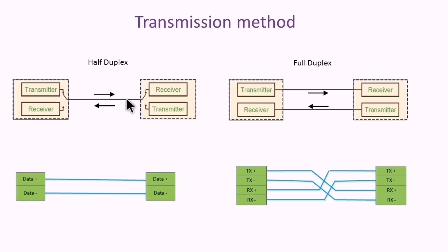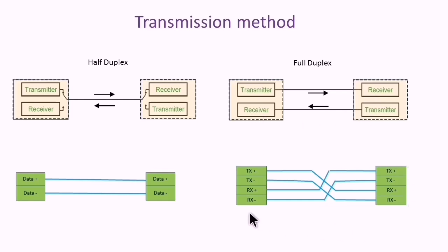The node can transmit the request and then wait to receive the response from the other node, and this method can work with just two wires. In full duplex, the node can transmit and receive data at the same time, and this mode works with four wires — two for transmit data and the other two for receive data.